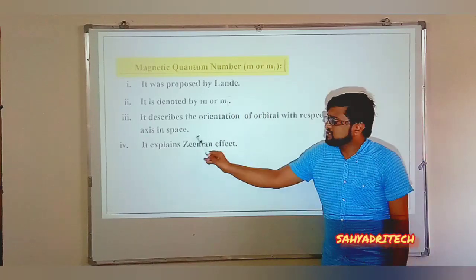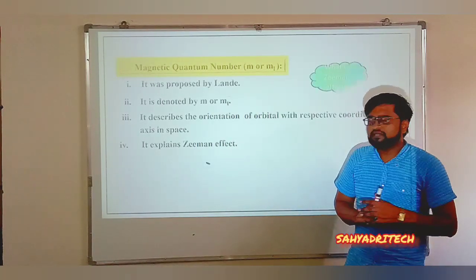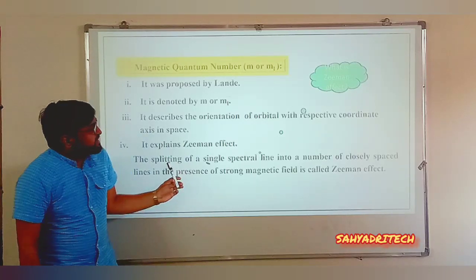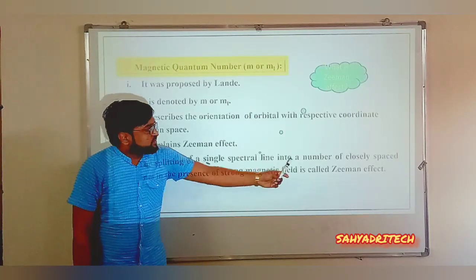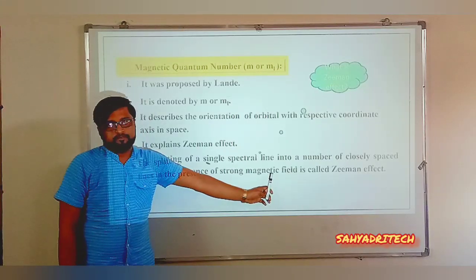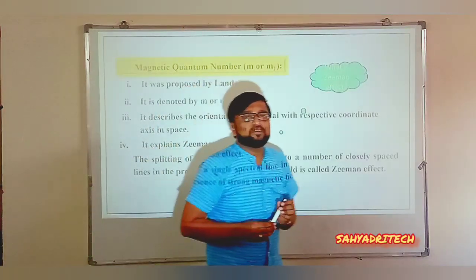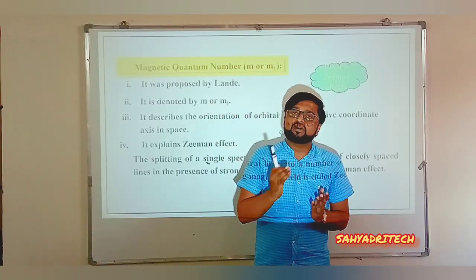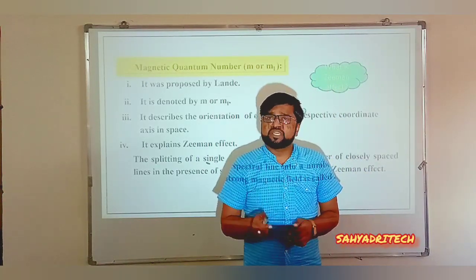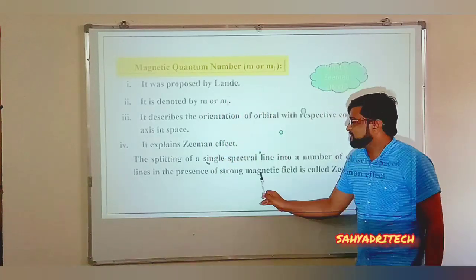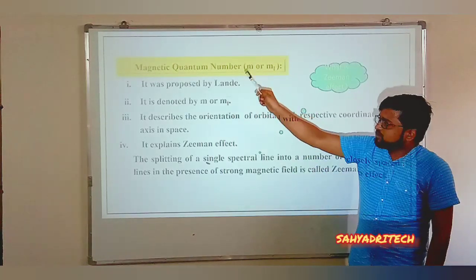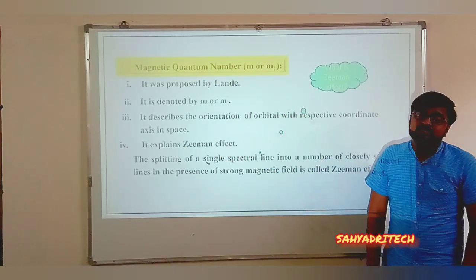The magnetic quantum number also explains the Zeeman effect. The Zeeman effect refers to the phenomenon of splitting of single spectral lines into a number of closely spaced spectral lines in the presence of a strong magnetic field. So in the presence of a magnetic field, a single spectral line is split into a series of spectral lines. The magnetic quantum number is able to explain this phenomenon.